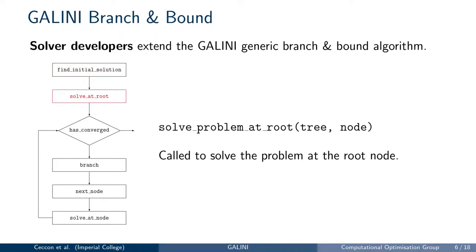Next, you need to implement a method to solve the optimization problem at the root node. Since this method is called only once at the beginning of the branch and bound algorithm, you can use it to initialize your data structures. This method should return a feasible solution point and objective value, if any, together with the best possible objective value obtained, for example by solving a relaxation of the problem.